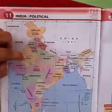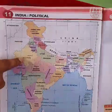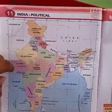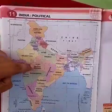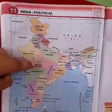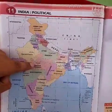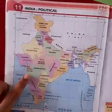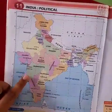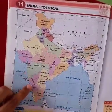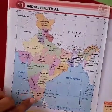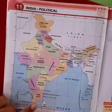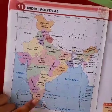Then after Himachal Pradesh is Uttarakhand. Then here is your Rajasthan, and just below it is Gujarat. On the right-hand side of Gujarat is Madhya Pradesh, whose capital is Bhopal. Below that, if you come down, is Maharashtra, which is followed by Karnataka and then Kerala.